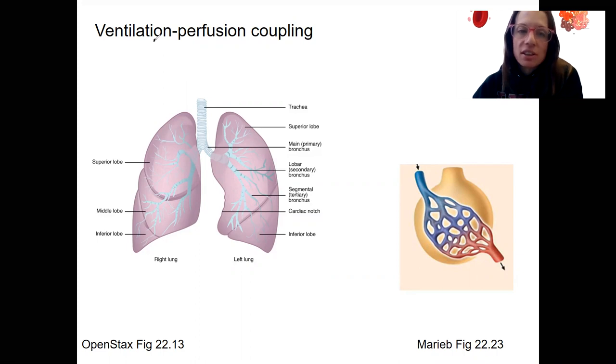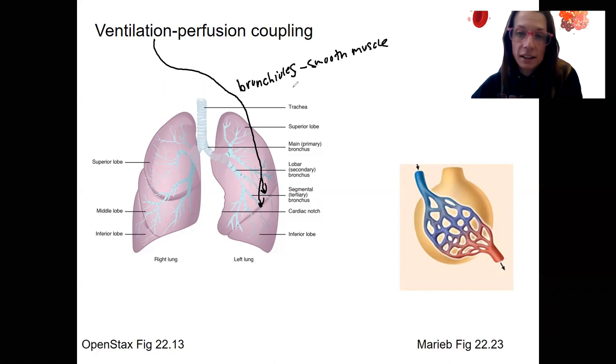So ventilation is that first one. Remember that the bronchioles, which are right around here, those are little bronchi. They're smaller than bronchi. That hyaline cartilage is kind of petered out, and now we have smooth muscle surrounding those. That smooth muscle can constrict or dilate.